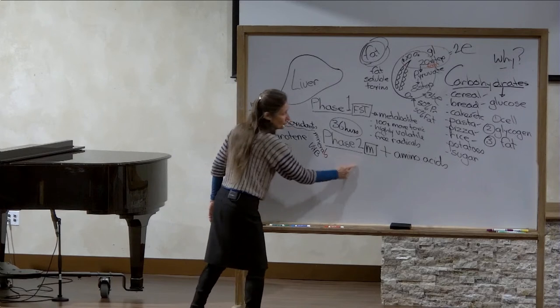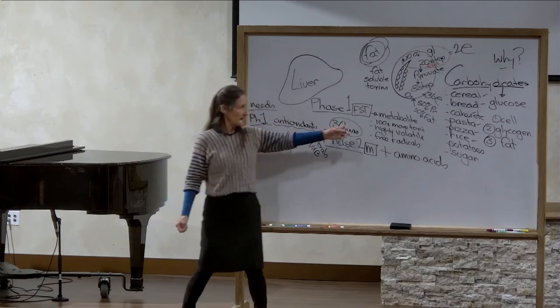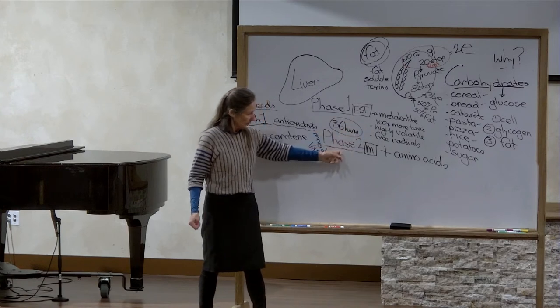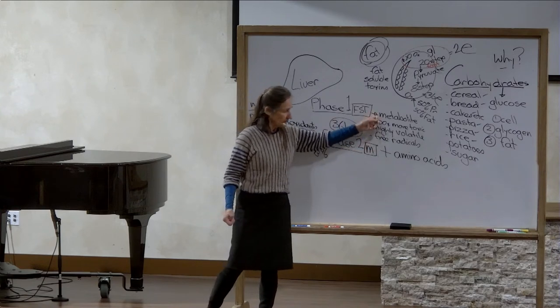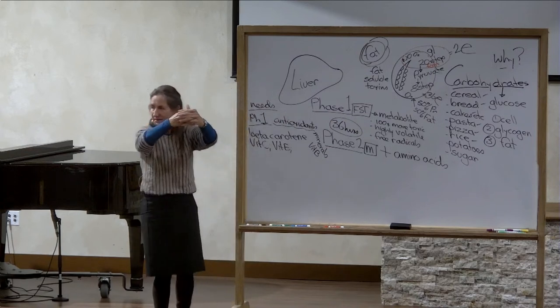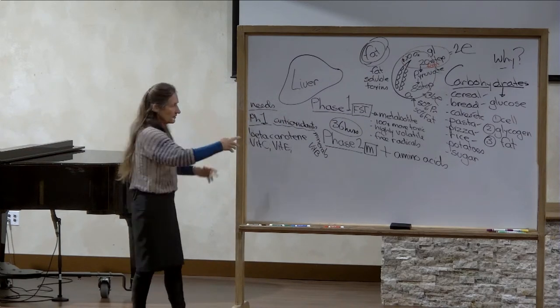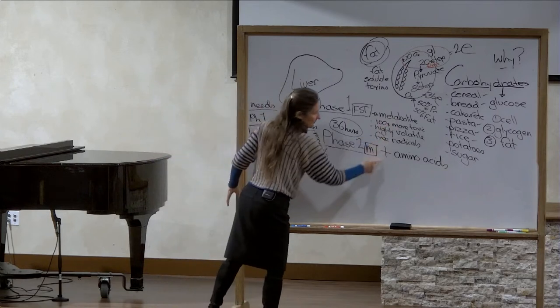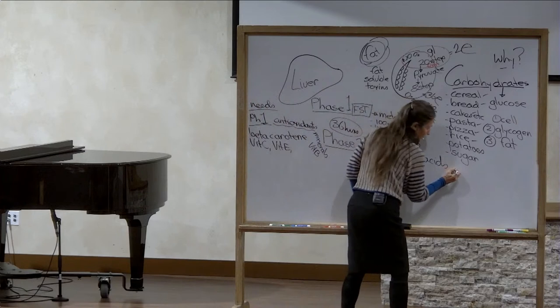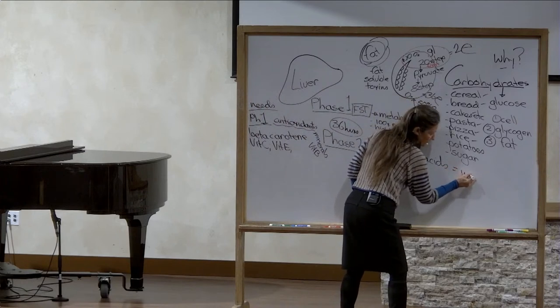The juices are supplying all this and then the protein drinks are supplying the amino acids. When stage two happens, within 36 hours of starting the detox, the liver takes this toxic metabolite and it joins it together with amino acids. The union of that toxic metabolite and the amino acids gives us the water soluble state.